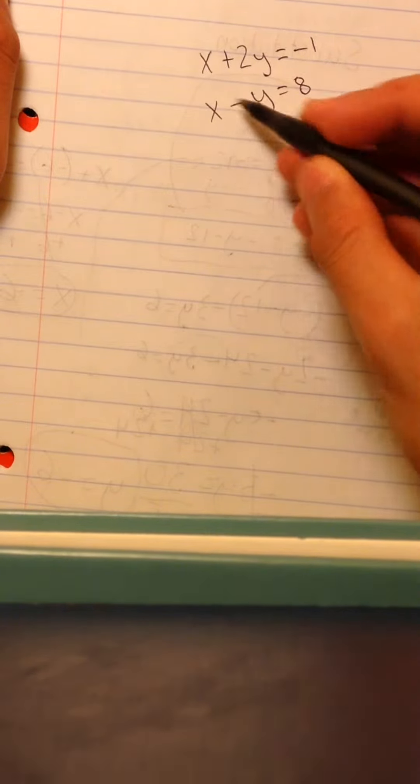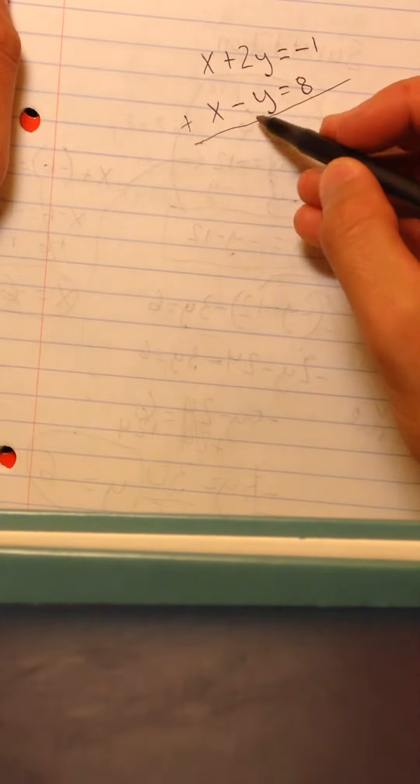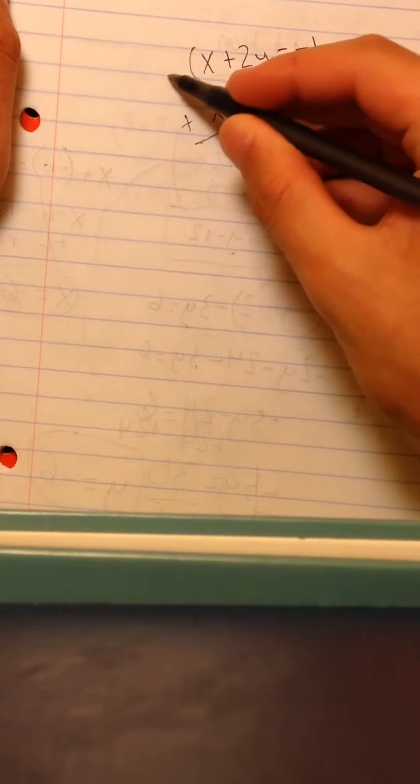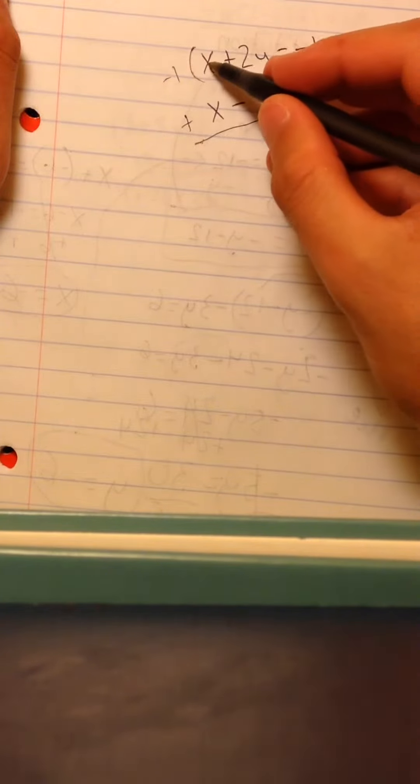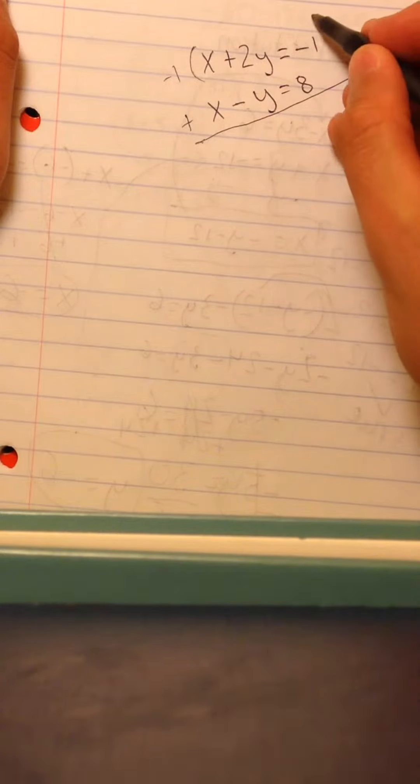So, can we add these together and eliminate anything? Not yet. So we're going to have to multiply the top by negative 1 to have a negative x on the top and a positive x on the bottom so they can eliminate each other.